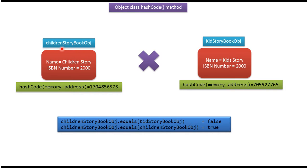Here you can see the Children's Story Book object. It has two fields: Name and ISBN number. Name is 'Children's Story' and ISBN number is 2000. Here you can see the Kids Story Book object. It also has two fields: Name and ISBN number. Name is 'Kids Story' and ISBN number is 2000.